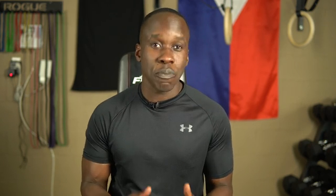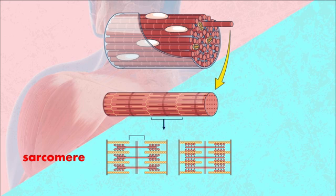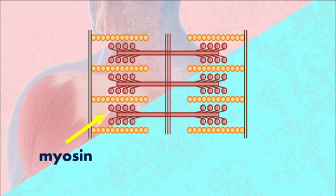We have the actual muscle fibers, of course, but then we also have things like blood vessels, nerve fibers, and the connective tissue that holds all this stuff together. When dealing specifically with the muscle fibers — aka muscle cells — we see that the fibers are made up of repeating subunits called sarcomeres. This is where the actual muscle contraction is happening. In each sarcomere, we have a thick filament called myosin and a thin filament called actin.